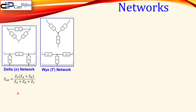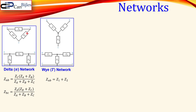Now there are some expressions we need to derive in order to go from one network format to another. I will first determine the impedances in general form between each pair of nodes. Starting with nodes A and B, that's the parallel combination of ZC and the series combination of ZA and ZB. The formula shows the product in the numerator and the summation of all three impedances in the denominator. For the Y network, between node A and B, it's simply Z1 and Z2 in series.